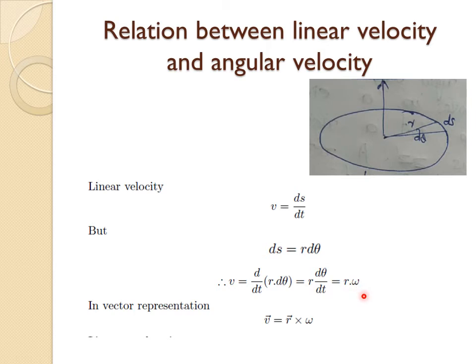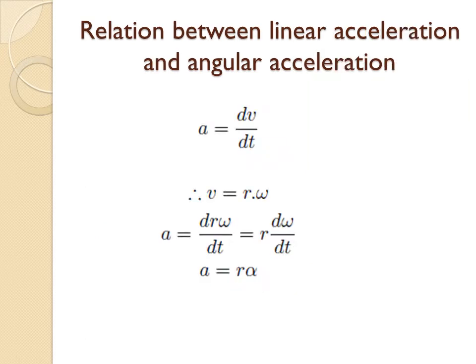In vector representation, the linear velocity is the cross product: vector v = vector r × vector omega. Since v, r, and omega are all vector quantities, the cross product of r and omega gives the linear velocity.